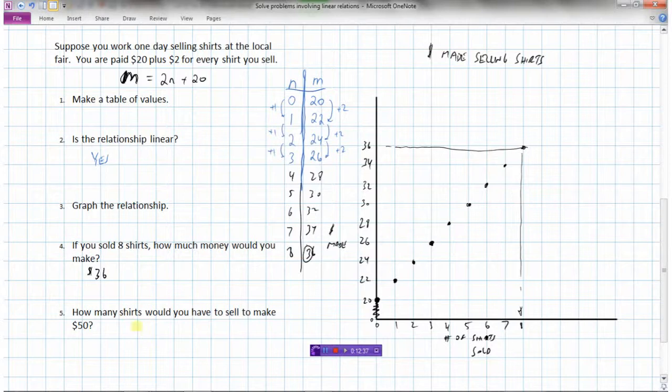Now this last one's a bit tricky. How many shirts would you have to sell to make $50? Say we wanted to make $50. Well, we could do a few things here. We could continue this pattern on. So 38, 40, 42, 44, 46, 48, 50. So 38 would be 9, 10, 11, 12, 13, 14. It looks like there would be 15 shirts that we would have to sell to make $50. So use our table of values and find out where we have 50 for money. That would be 14 shirts.